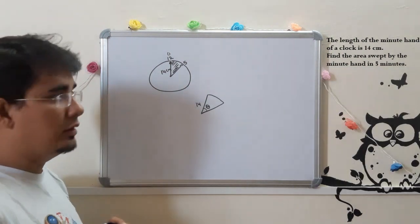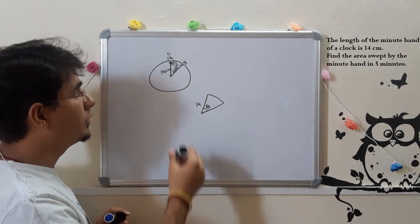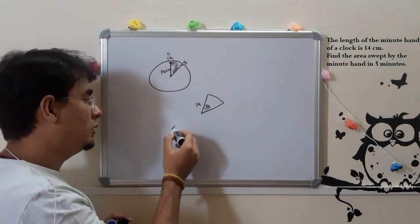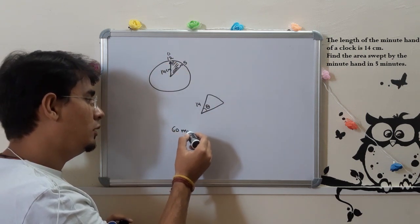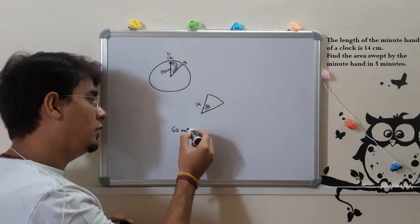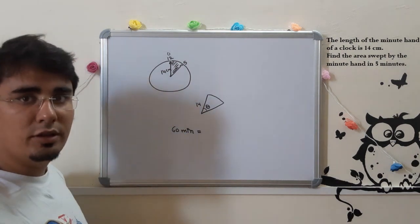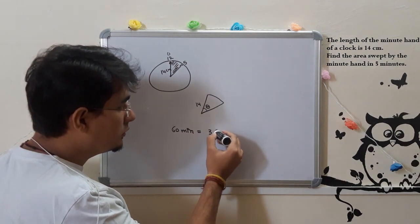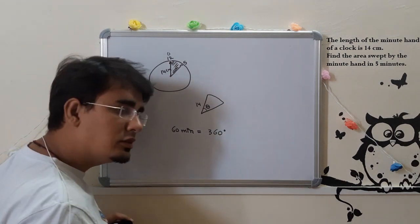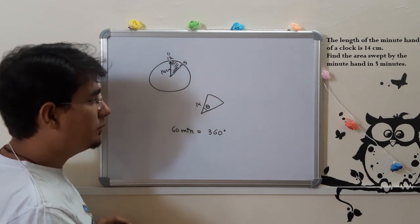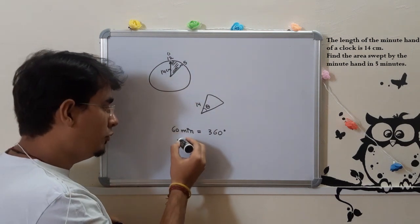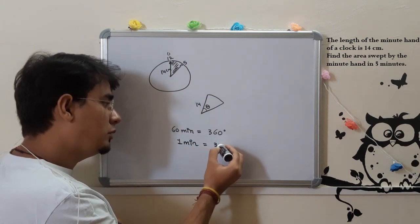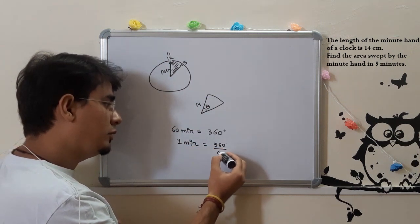Let's go full circle. For a full circle, we have 60 minutes. So one minute, using unitary method, is 360 divided by 60.